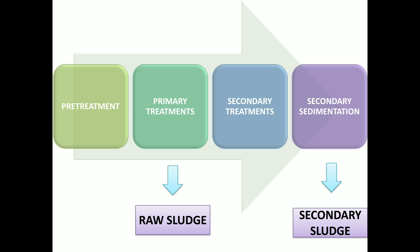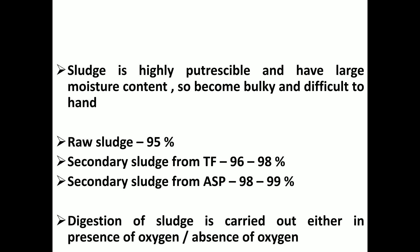That is primary treatment — the primary sedimentation tank. Obviously, sedimentation occurs. The residual sludge is collected. We then move to secondary treatment units, where we also get sludge. We use a sedimentation tank in secondary treatment as well.